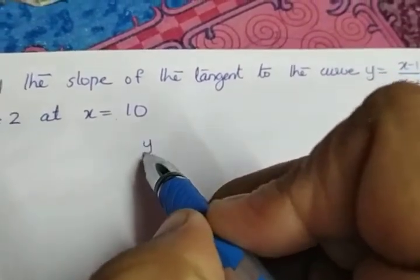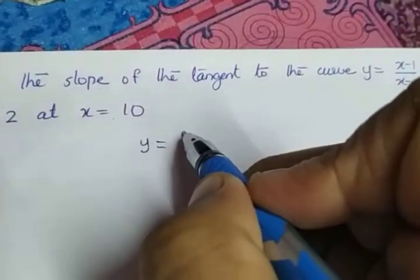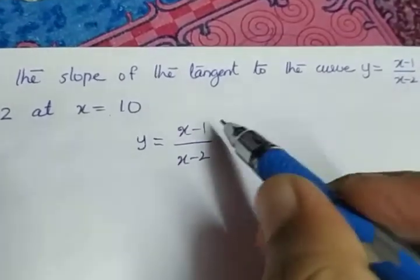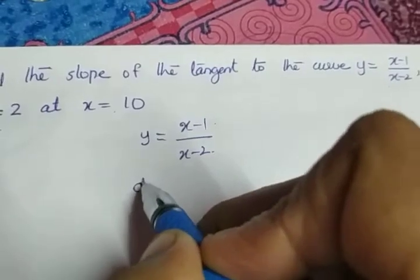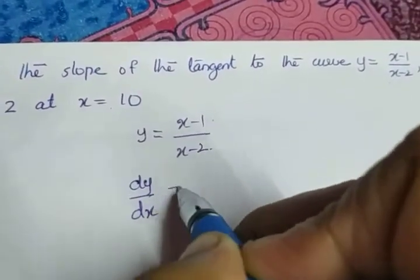So to find the slope, what we will do first, we have to take the derivative. y equals (x-1)/(x-2). Numerator is a function, denominator is another function. So to find the derivative, what you have to do is apply quotient rule.